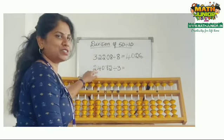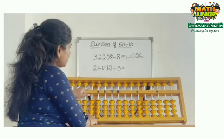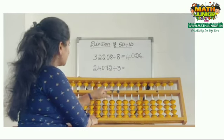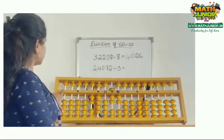Next question is 24072 divided by 3. Place the question using 10100 10100 10 cent unit place. Then place 3.